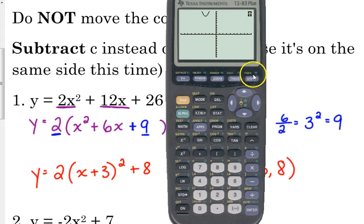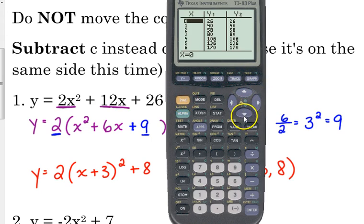Now just to make sure, I'm going to go to my table. And I'm going to make sure that I get all the same y values for the same x values. And we do. If you look at your table, for every x value, you should see the exact same y value for y1 and y2.